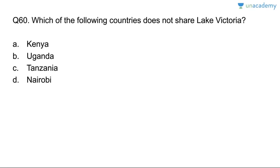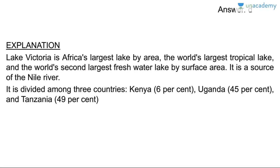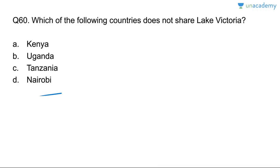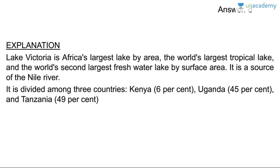Last question for this lesson: which country does not share Lake Victoria? Lake Victoria is the largest lake in Africa by area, the world's largest tropical lake, second largest freshwater lake, and the source of the Nile River. It is shared among three countries: Tanzania (49%), Uganda, and Kenya. The answer is Nairobi — because Nairobi is a city, the capital of Kenya, not a country.